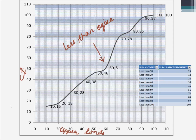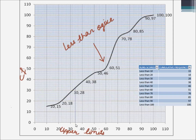This type of ogive is the less than ogive. Once we have plotted it, we can use it to calculate the total number of matches corresponding to a given value. Suppose we need to calculate the total number of matches in which the runs scored are less than 34. Locate 34 on the x-axis, draw a perpendicular to this curve, and then locate the corresponding y-coordinate on the y-axis — which will be around 33 or slightly less than 33. So approximately 33 matches had runs scored less than 34.